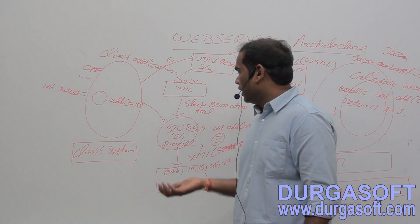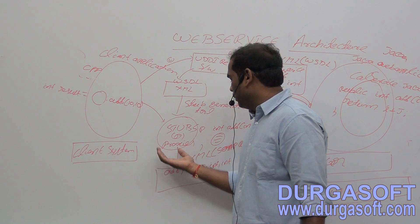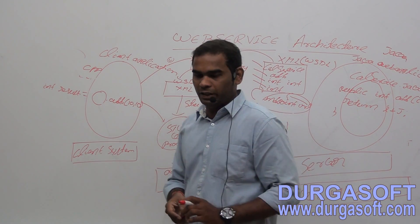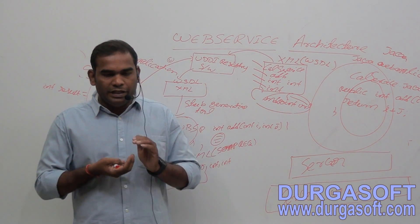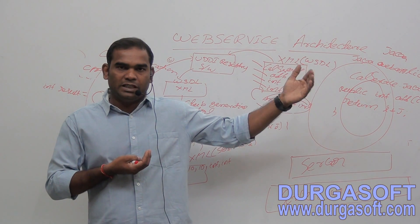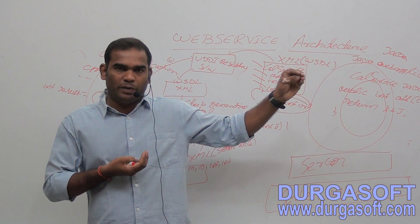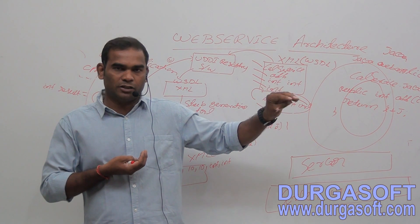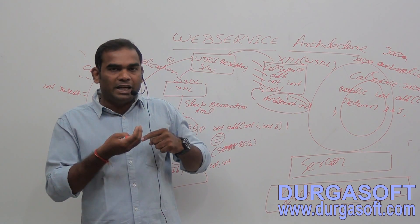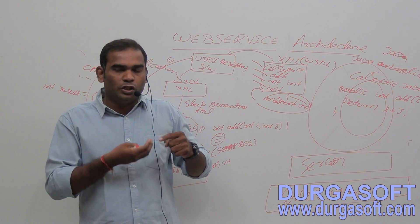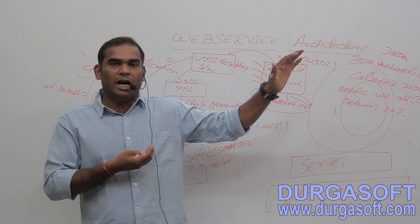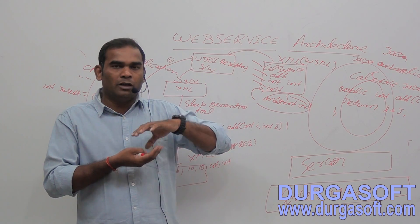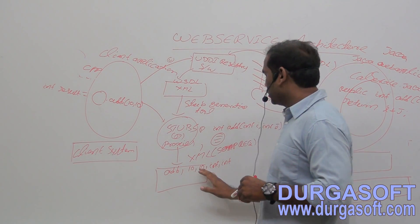Why does the stub prepare a SOAP request to store the client's requested method details into an XML document? Because this XML document needs to be sent to the service. The service may be developed using Java, C++, PHP, or C#, so the requested method details must be understandable by the service application. That is the reason we store this information in the form of an XML document — which is called a SOAP request.